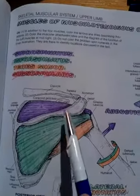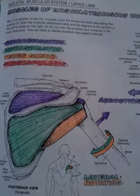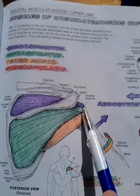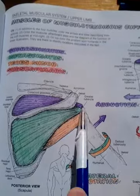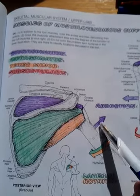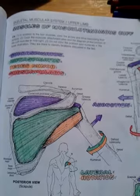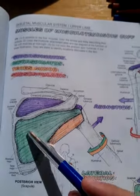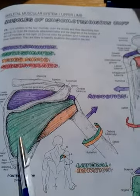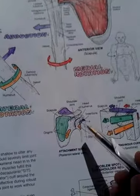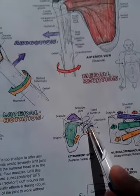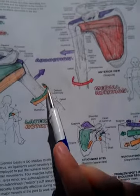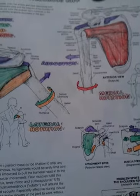Then we have supraspinatus, which originates on the supraspinous fossa and inserts on the greater tubercle. Its function is abduction of the arm. And we have infraspinatus, which originates on the infraspinous fossa and inserts on the greater tubercle. Its function is abduction and supination of the arm.